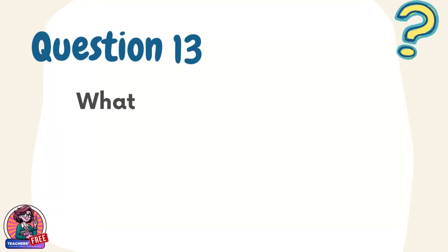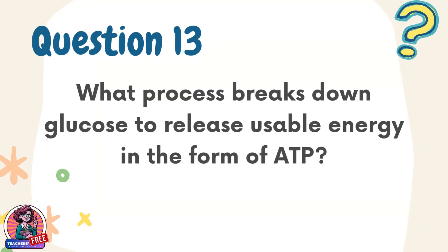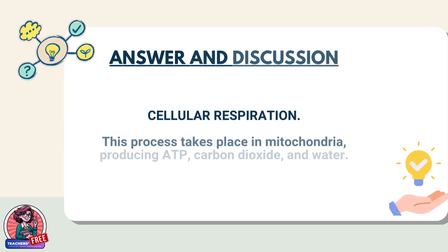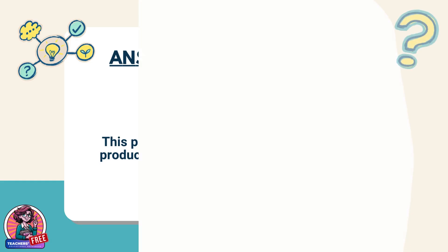Question 13. What process breaks down glucose to release usable energy in the form of ATP? Answer: Cellular respiration. This process takes place in mitochondria, producing ATP, carbon dioxide, and water.